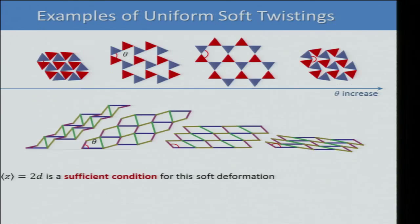We call these deformations uniform soft twistings and use them to introduce topological transitions. For a Kagome lattice you can twist one way or the other — all floppy deformations. For a square lattice you can twist from one extreme to another, using the bond angle θ to label all states along this coordinate. Z = 2D is a sufficient condition for a periodic lattice to have such a soft deformation.